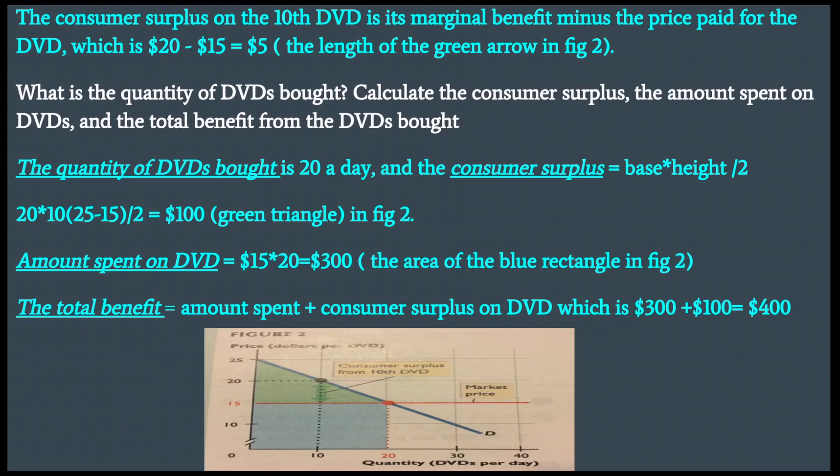The amount spent on DVDs is $15 times the total quantity purchased, which is 20, giving $300 — price times quantity — shown as the area of the blue rectangle in Figure 2. The total benefit is the amount spent plus consumer surplus: $300 plus $100 equals $400, which is the rectangle plus the triangle in Figure 2.